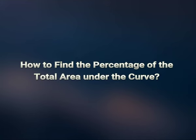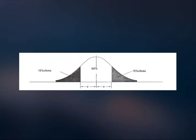Let us now try to understand how to find the percentage of the total area under the curve. We saw that an interval of one standard deviation plus and minus from the mean contained about 68% of the total area under the curve. However, we are interested only in the area between the mean and one standard deviation to the right of the mean — not plus and minus. This area must be half of 68%, or 34%, for both distributions.